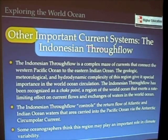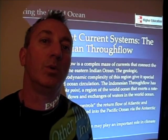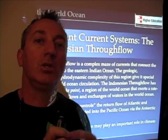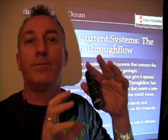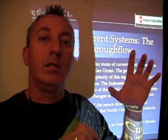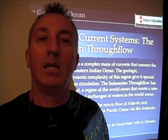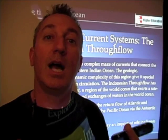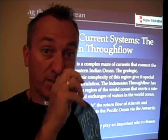The Indonesian Throughflow, in a similar fashion, represents an ocean choke point. It exerts rate-limiting effects on current flows and exchanges of waters in different regions of the world ocean. The Drake Passage is another choke point — located below South America, between South America and the Antarctic Peninsula, a relatively narrow part of the ocean that limits exchange of water between the Pacific and Atlantic Oceans. These choke points may be really important in terms of not only ocean circulation but also Earth's climate, because they control the rates at which heat is exchanged between different oceans.